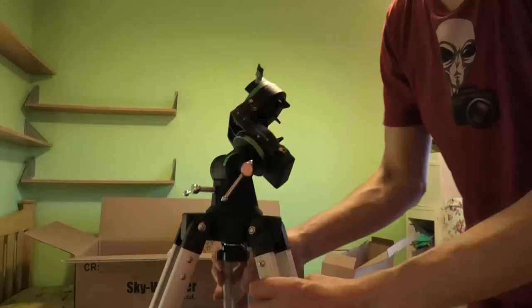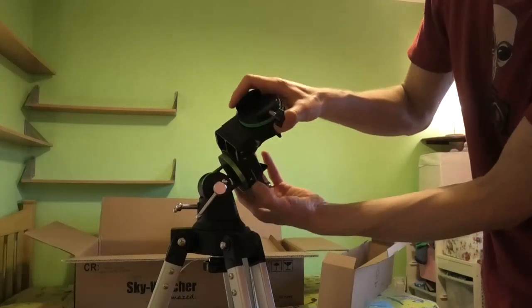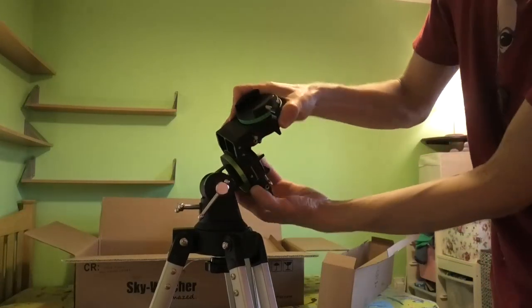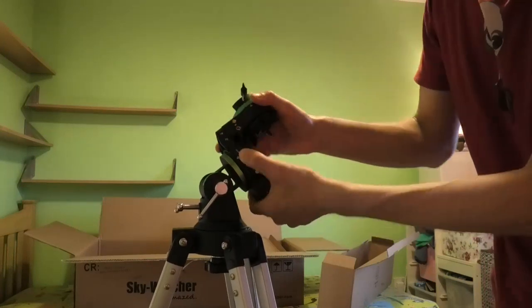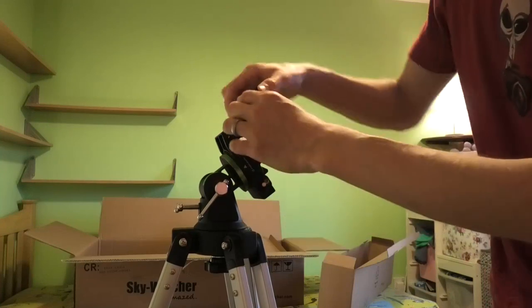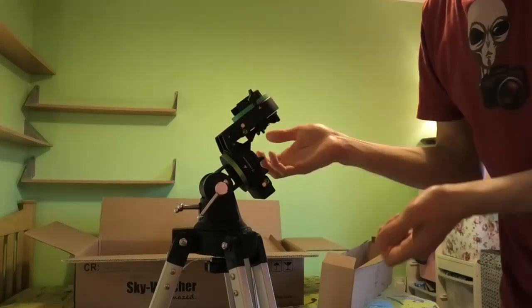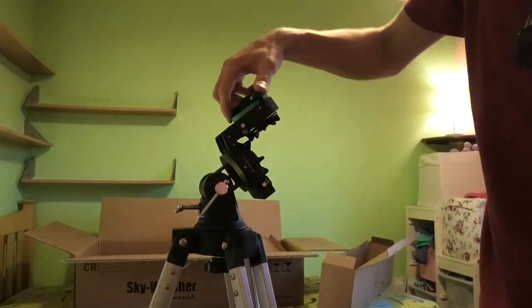So I'm undoing the clutches now just to get a feel of how smoothly it moves with them undone. Yeah, there's friction on there but you can turn it, it all feels lovely and solid. I think this is immediately a very good replacement for the EQ1 or EQ2 even.